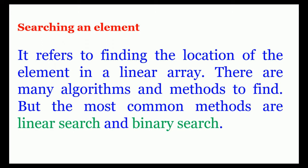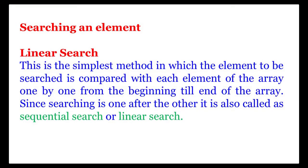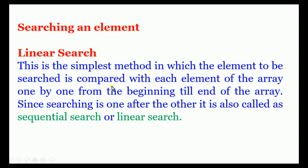Linear search is the simplest method in which the element to be searched is compared with each element of the array one by one, from beginning to end. We take one array, take the search element, and search it one by one from beginning to end — that is called linear search.